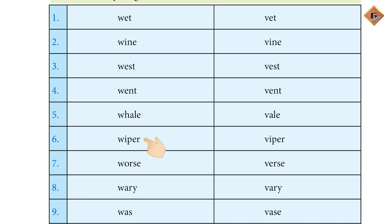Viper — W-I-P-E-R is a wiper used to clean things like water, and V-I-P-E-R is a snake (viper). These two words sound similar but have completely different meanings and spellings.